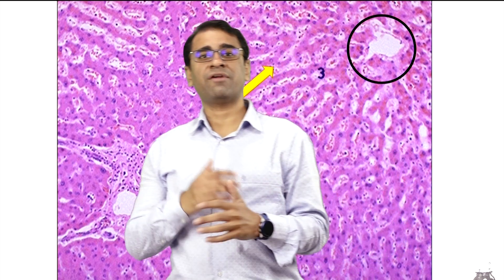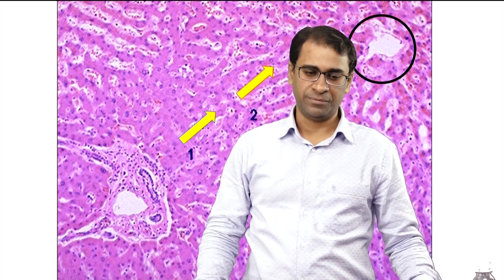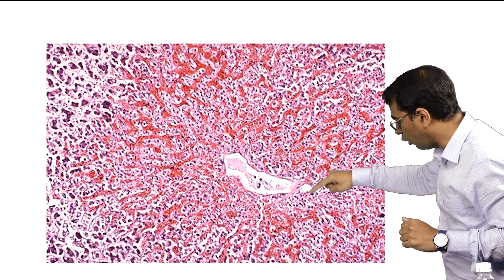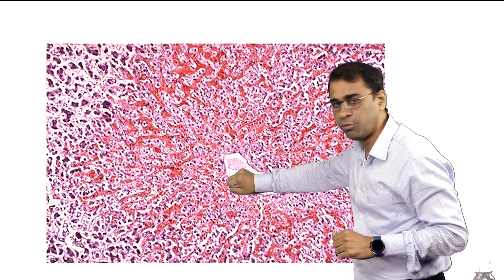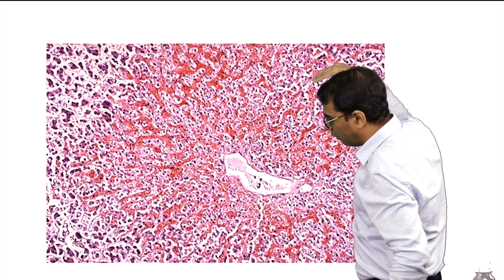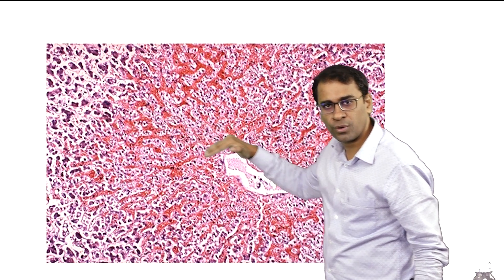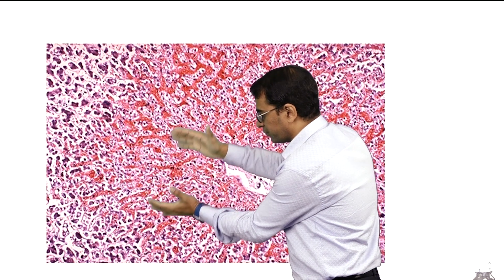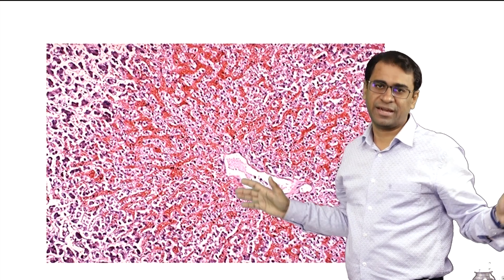In acute venous congestion, we see the initial injury and hence hydropic change around zone 3. In chronic venous congestion, imagine the central vein here and the outflow is completely blocked. Blood is not able to come into this area. Gradually, this area will have dilation of sinusoids. Unless blood flows from zone 1 towards zone 3, what happens? The blood is not able to flow, so on one side the sinusoids have got dilated, but on the other side the hepatocytes between them have all got necrosed. This whole area appears red in colour.